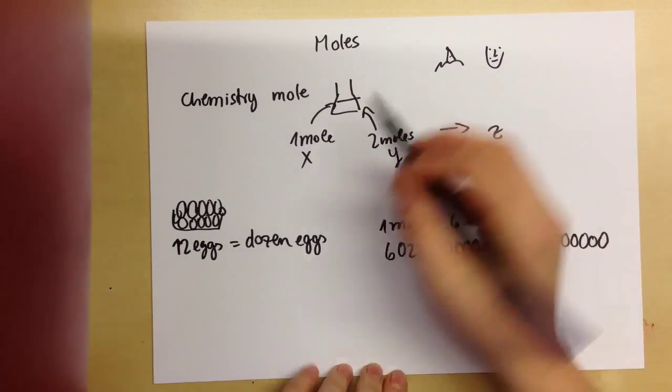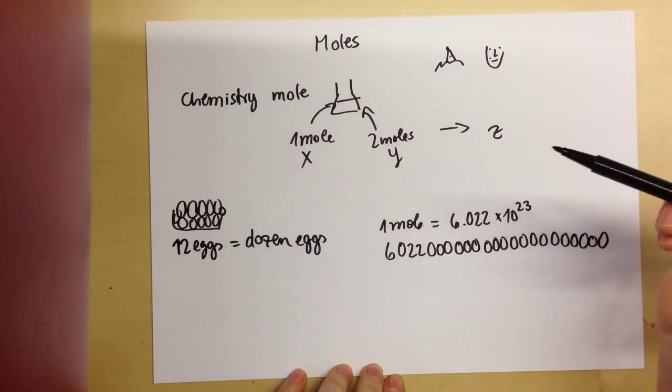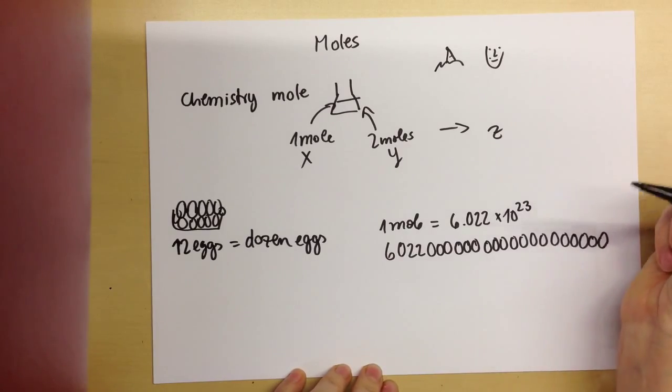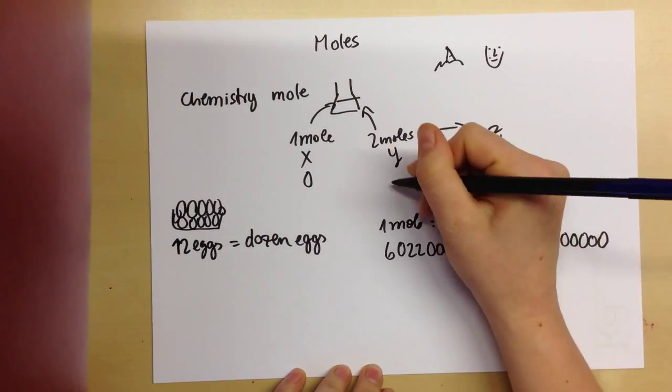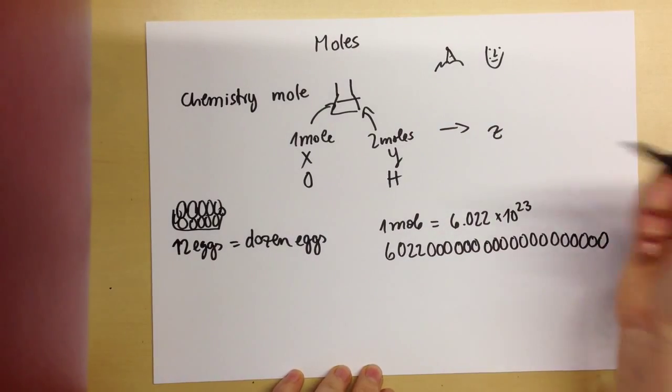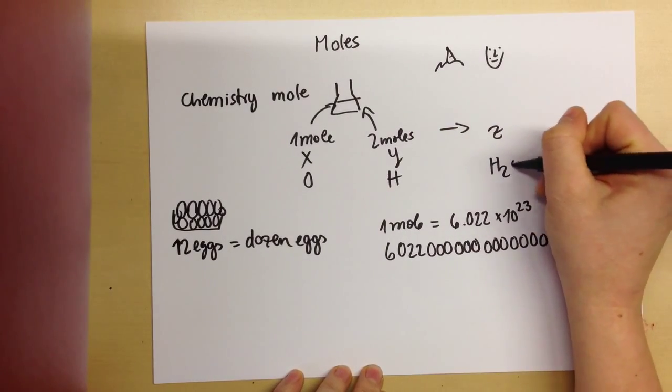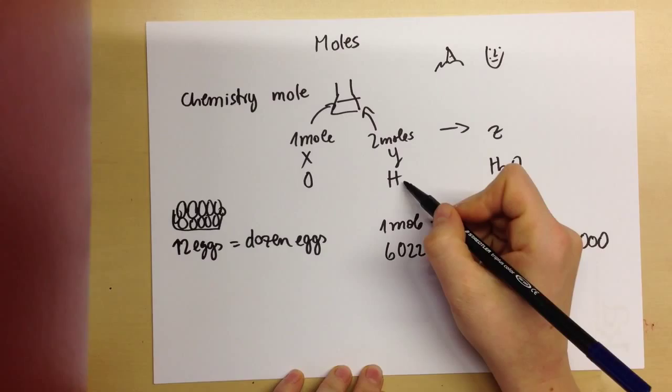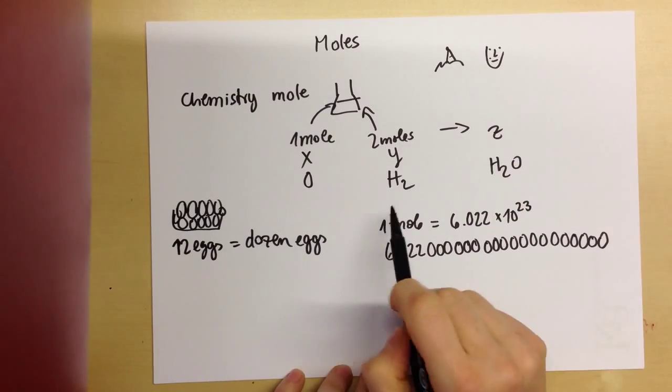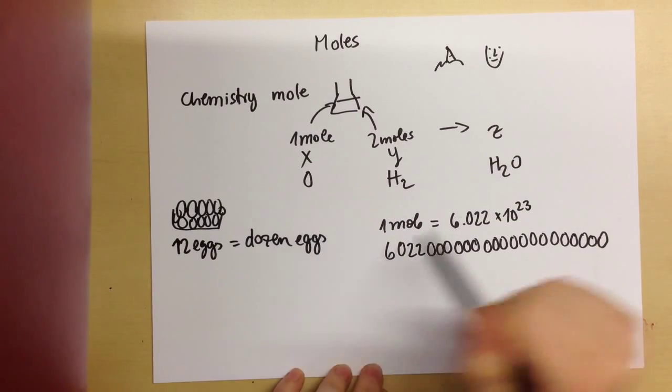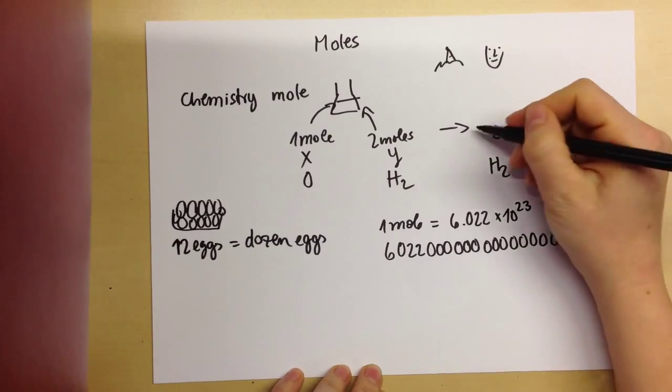Say we could, instead of writing one mole X and two moles Y, we could say, for example, we're having oxygen react with hydrogen to make water. So we know we need two hydrogen atoms, one oxygen to make one water.